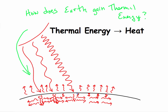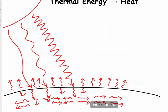Then the ground heats up — not just at the surface, but deeper and deeper, and then sideways. This sideways heat transfer is called conduction. So we have solar radiation, absorption, and conduction. The Earth also radiates heat back out into the atmosphere.